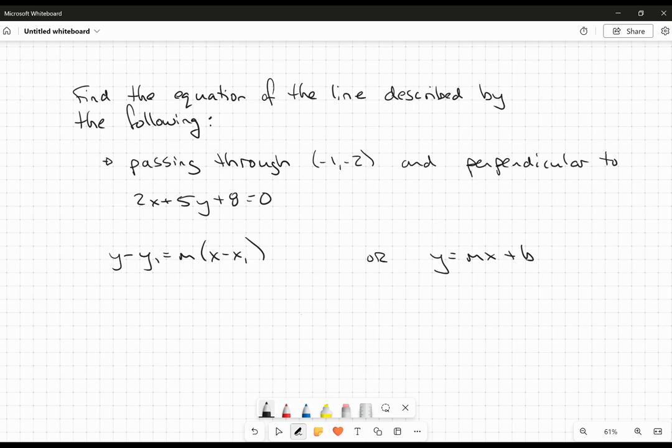Now, I know that it passes through the point (-1, -2). That's awesome. What I need is to figure out the slope.